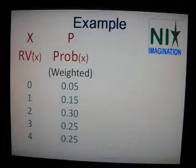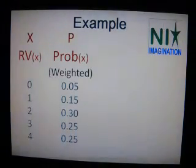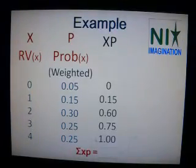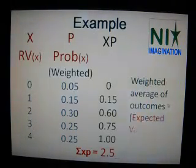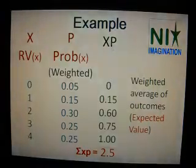For example, random variable x is 0 and probability is 0.05. These are the random variables and their probabilities. Expected values of respective outcomes are calculated by multiplying x by probability. The summation of this expected value is 0.25. Expected value is the summation of all x multiplied by their respective probabilities.